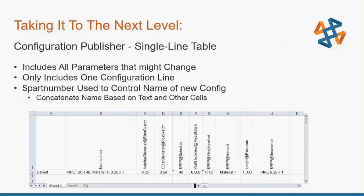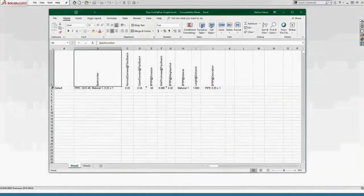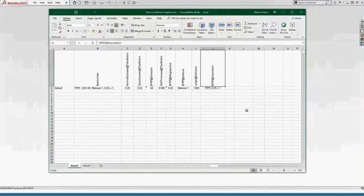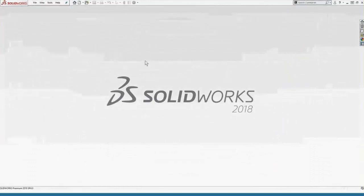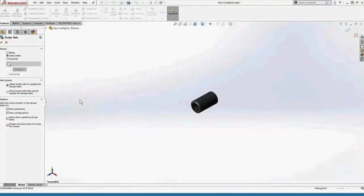We'll be looking at the single line table first, then jump to a multiple line table. That screenshot shows what a single line table looks like — it's a design table that includes all of the parameters across the top that might change. It only includes one configuration line — that 2A default — and that dollar sign $PART_NUMBER is used to control the name of the new configurations. You have to have a design table to get to the configuration publisher. Here's our created design table: pretty simple, with our parameters across the top. To get to the configuration publisher, I have to first insert this design table from my file, link it, browse to that single line design table, and hit the green check.